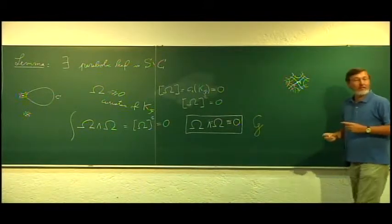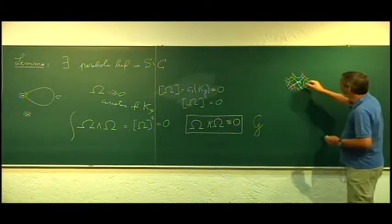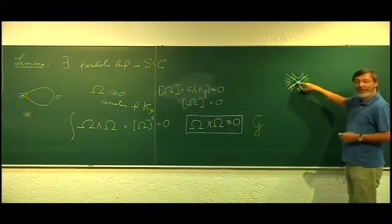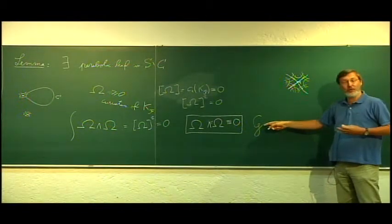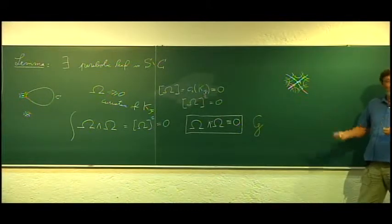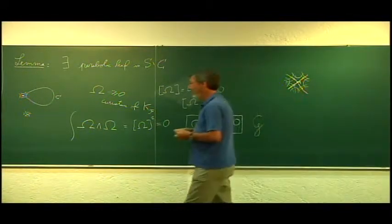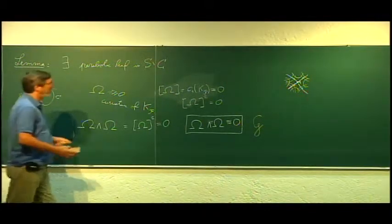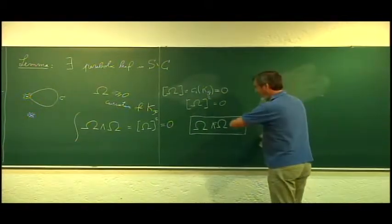There exists at least one parabolic leaf. Morally, this parabolic leaf is the two separatrices of Q, because then we still have morally the foliation G, which will be transverse outside the separatrices. There exists this parabolic leaf — at least one — but I want to prove that all the leaves are parabolic.